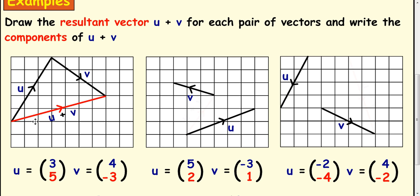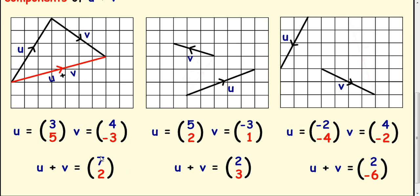And if you watch, one, two, three, four, five, six, seven, and two up. So the components of this red line, you can see from the diagram, it's seven along and two up. But we can get that just from adding the vector components here.